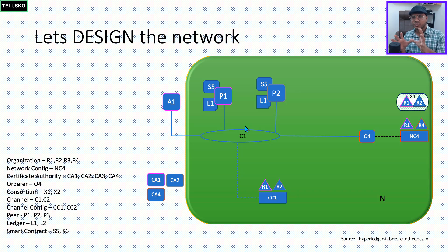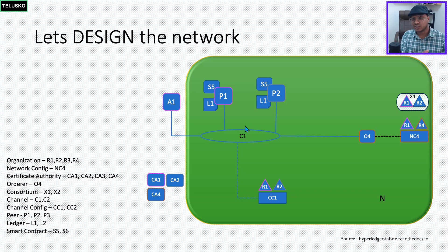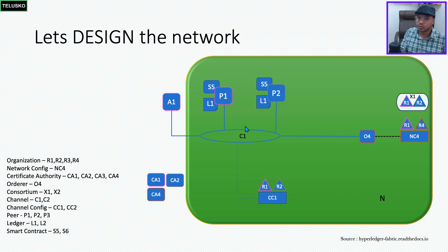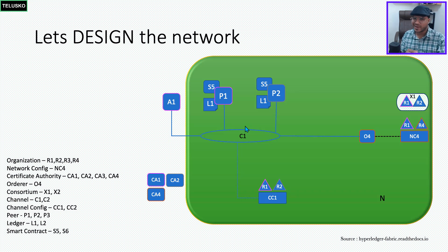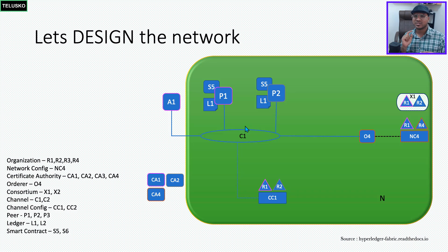To recap: we got a network instantiated by the orderer peer using configuration NC4, administrated by R4. We also wanted separate transactions for R1 and R2, so we created channel C1 with its own configuration CC1, managed by R1 and R2. The channel has nodes P1 and P2 from those organizations — no other organization can enter this channel without changes to CC1. In the next video, we'll have more fun with more channels and consortiums.